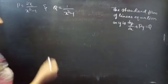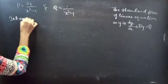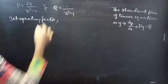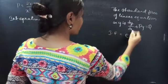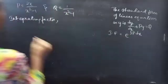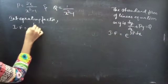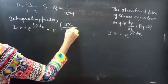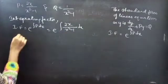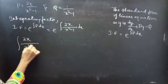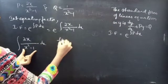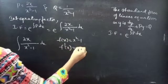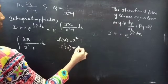Now we need to find the integrating factor of the given equation. We know that the integrating factor of a linear equation in y is given by e^(∫P dx). Using this formula, the integrating factor equals e^(∫2x/(x² - 1) dx). To evaluate this integral, let f(x) = x² - 1.